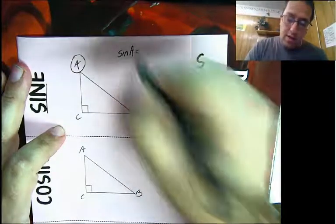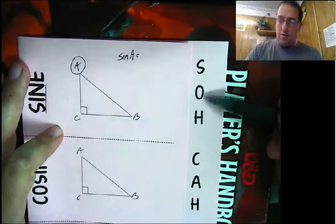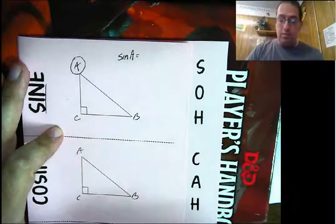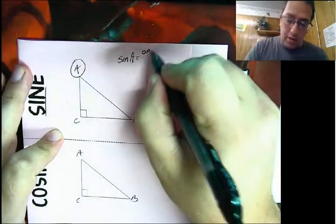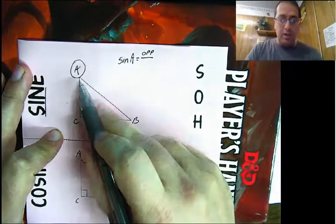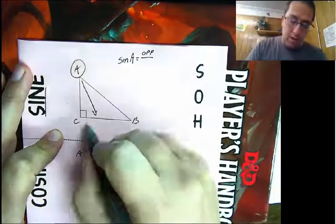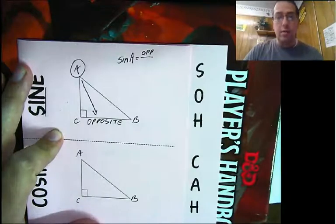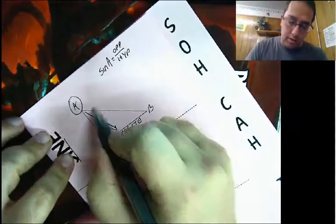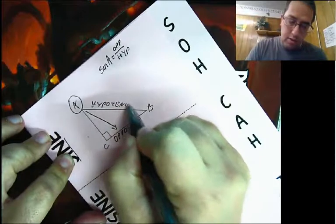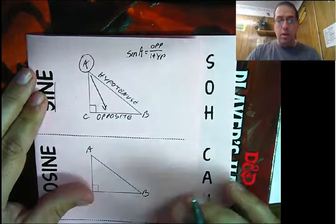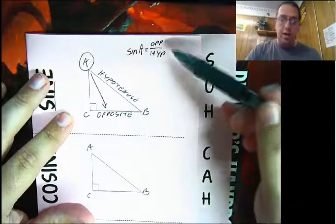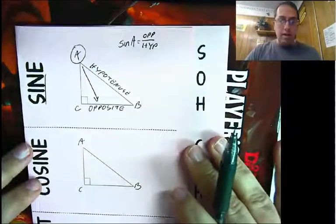Sine of angle A equals — we have O-H. The O-H tells us which sides of the triangle we're going to look at to get this ratio. O stands for opposite — we want the side opposite angle A. H stands for hypotenuse, which is across from the right angle. So, sine of angle A equals opposite over hypotenuse. For example, if CB had a length of 7 and AB had a length of 10, the sine of angle A would be 7 over 10. That's all it is — nothing complicated.